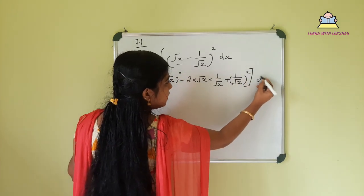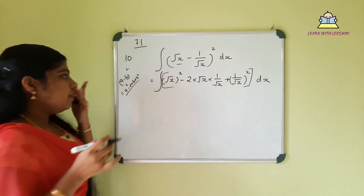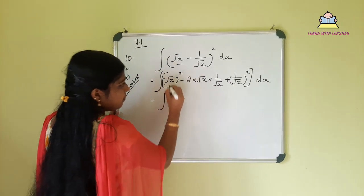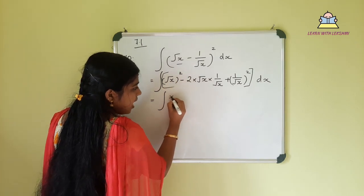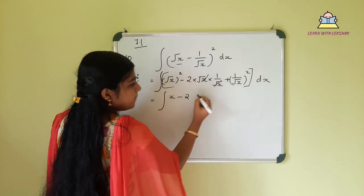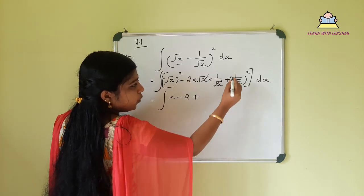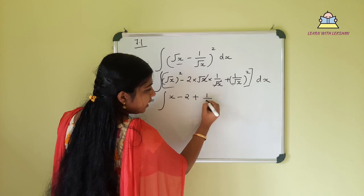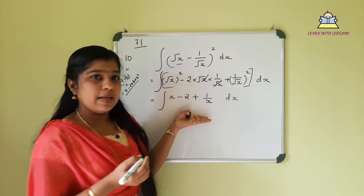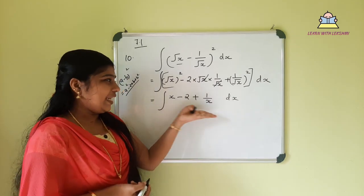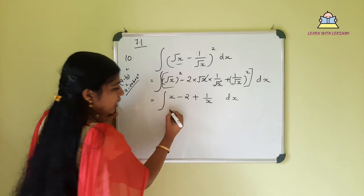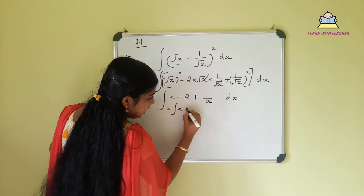Expanding further: root x squared equals x, then minus root x times root x which is 2, plus 1 by root x whole squared which is 1 by x. So the integrand becomes x minus 2 plus 1 by x, and we now take the separate integrals: integral of x dx, minus 2 integral dx, plus integral of 1 by x dx.